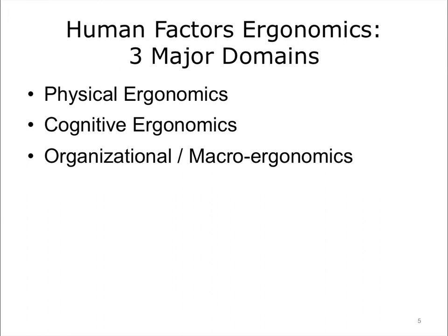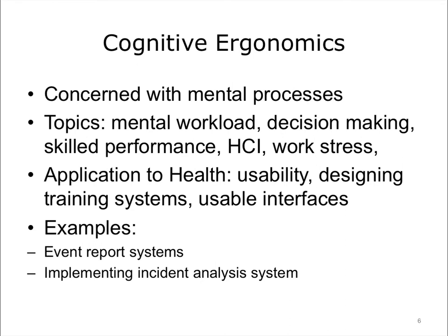The term ergonomics is sometimes used interchangeably with human factors. We can characterize three main domains. For this unit, we will focus on cognitive ergonomics, which is concerned with the mental processes. Cognitive ergonomics includes mental workload, an issue we will come back to later, and usability of systems. This lecture focuses predominantly on cognitive issues.